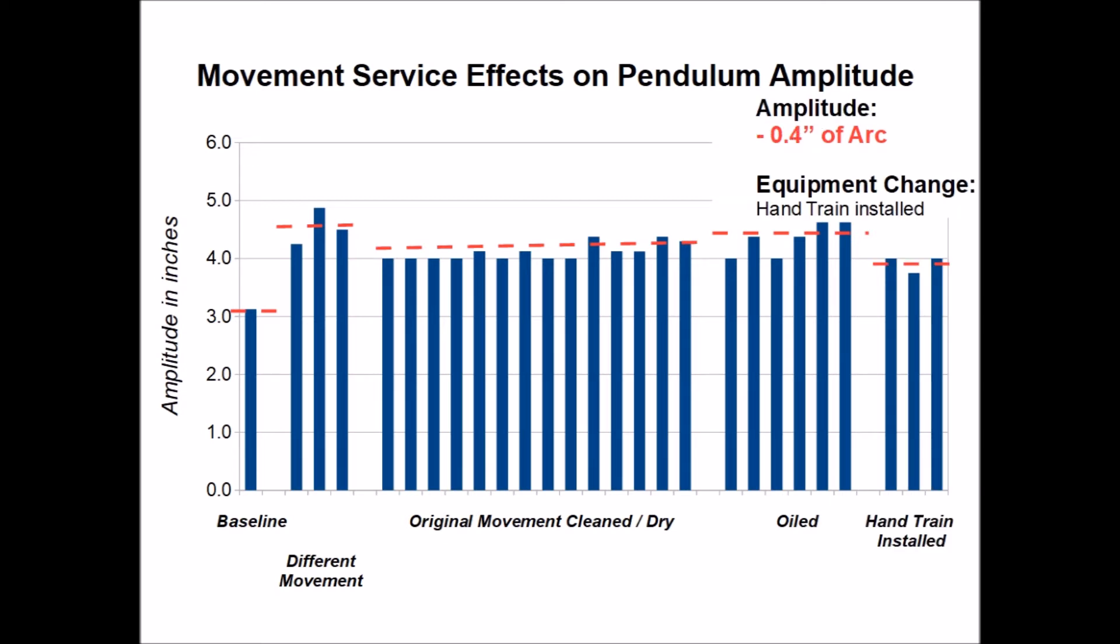And finally, I reinstalled the hand train as well as several of the contacts for the master clock to put some resistance on the movement and that resulted in an amplitude decrease of 0.4 inches.